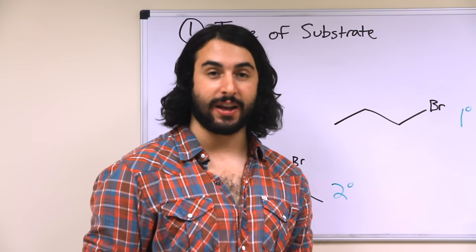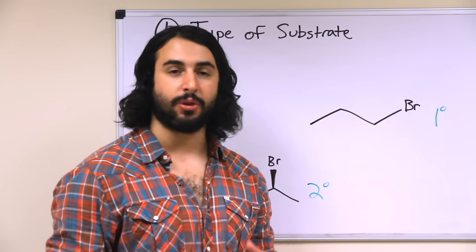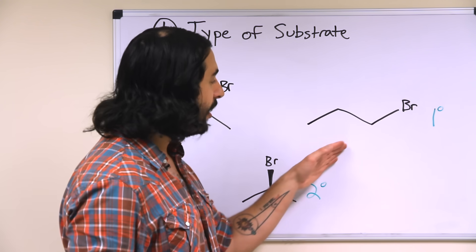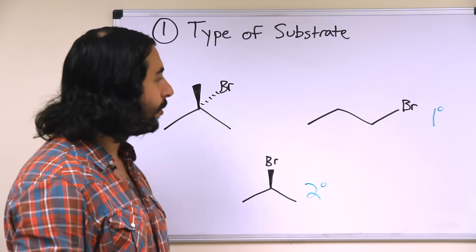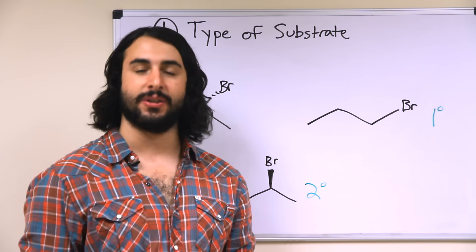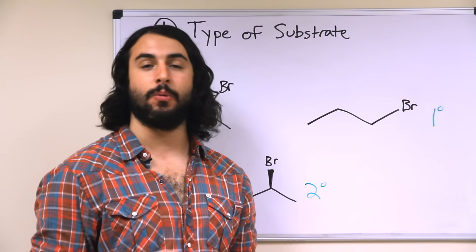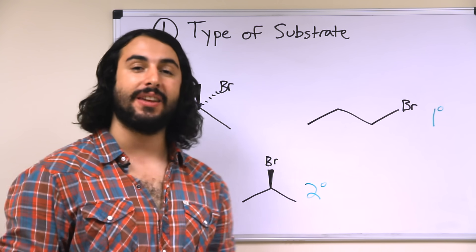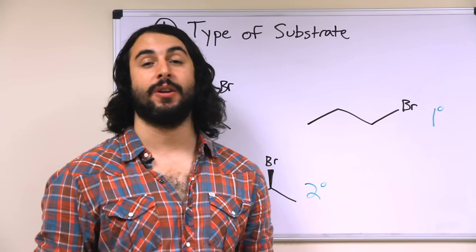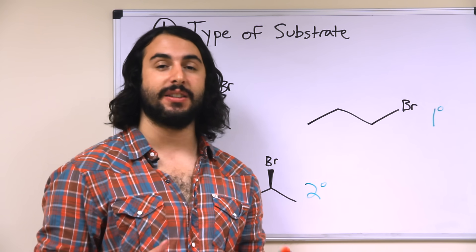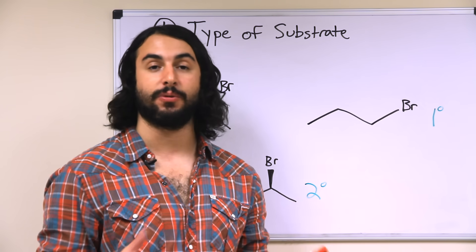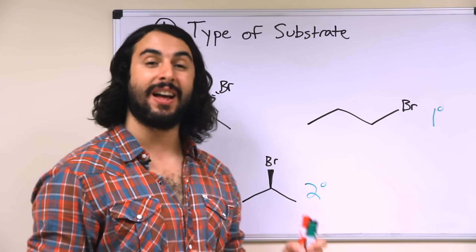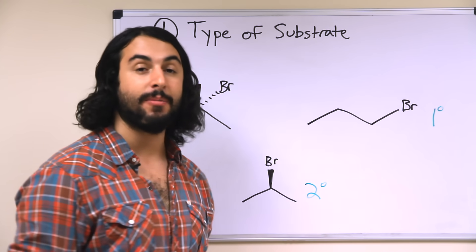With a primary haloalkane, SN2 is now very possible — there's not very much steric hindrance, so it's going to be very possible for a nucleophile to approach. SN2 is going to be possible, and E2 is also possible. However, SN1 and E1 are very unlikely to happen, because if the bromine were to leave, that would leave a primary carbocation, which is very unstable because it does not get to enjoy much hyperconjugation from neighboring alkyl groups. So we can more or less rule out E1 and SN1 for a primary haloalkane.